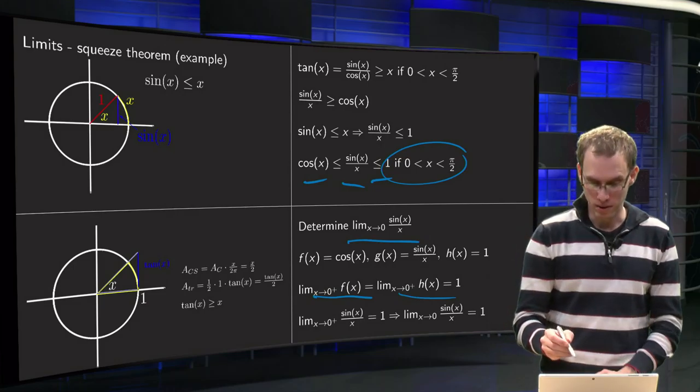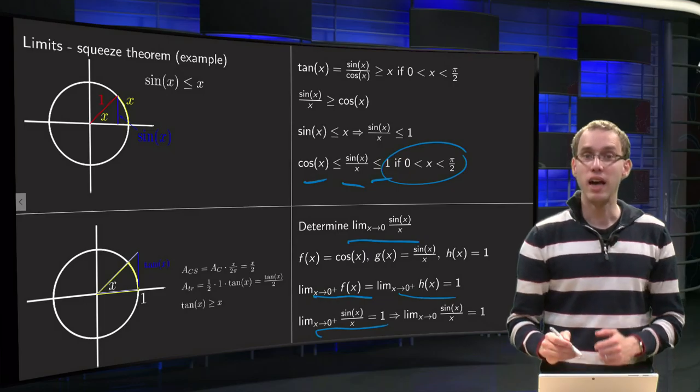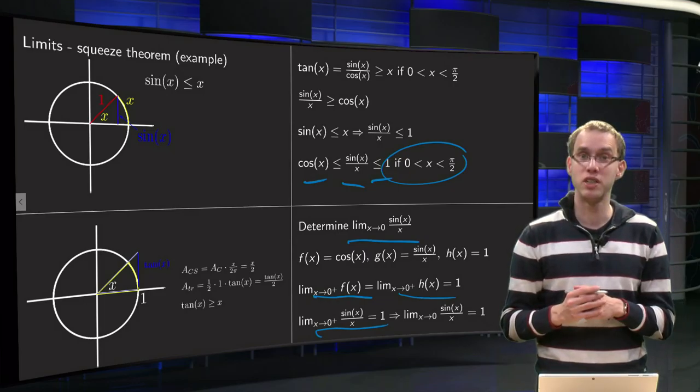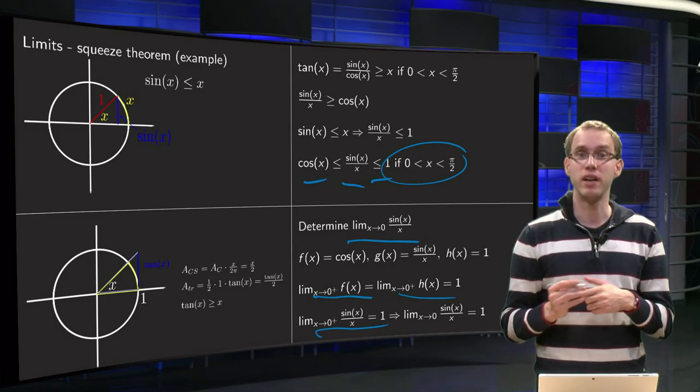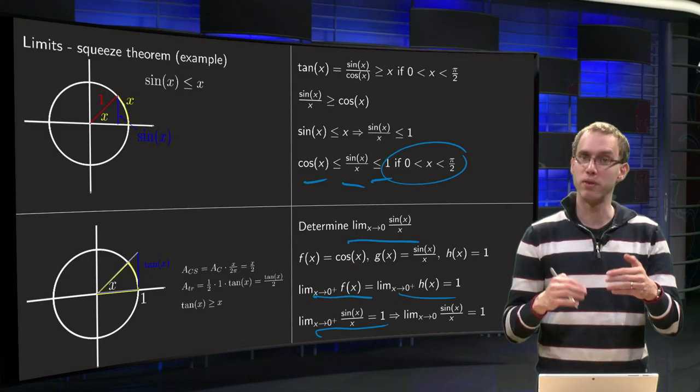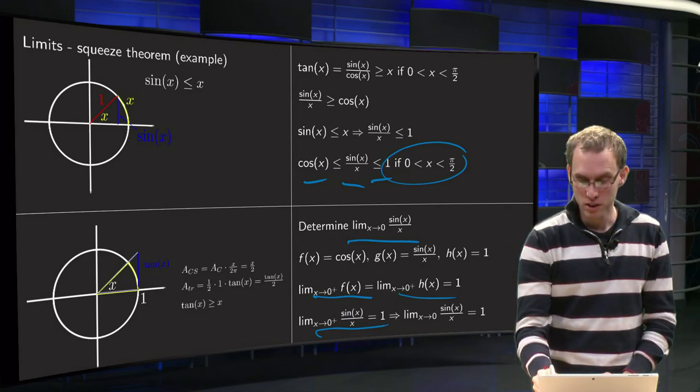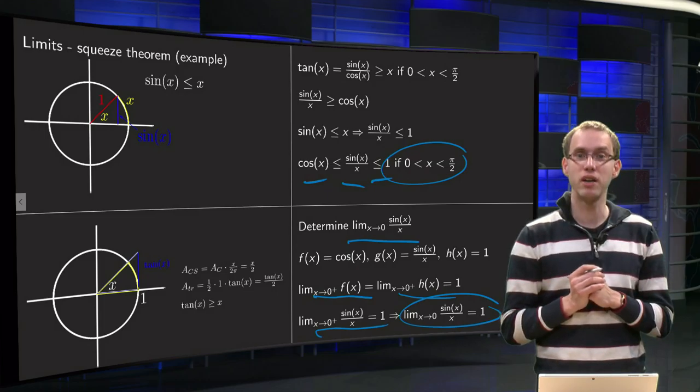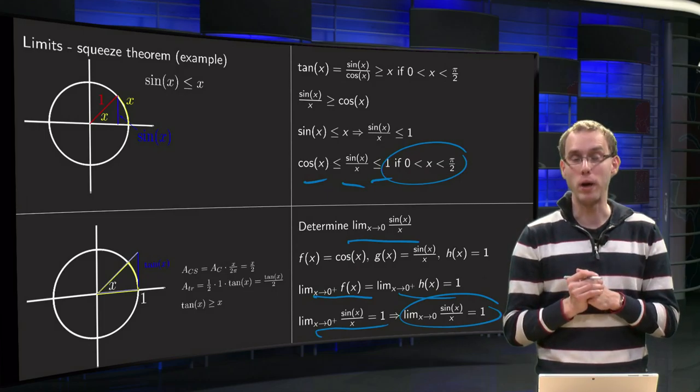So that means that our limit from x to 0 sine of x over x equals 1 and due to the symmetry it doesn't matter where you come from, left or right. So our limit x to 0 sine of x over x equals 1.